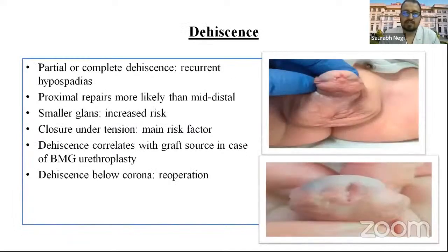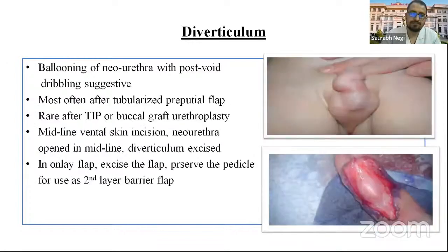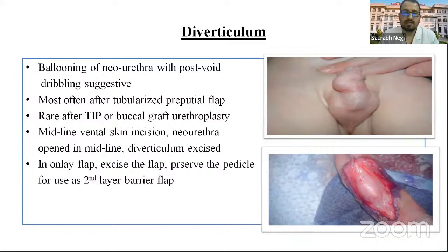Diverticulum can be partial or complete and causes recurrent hypospadias symptoms. Proximal repairs are more likely than distal repairs. Increased risk includes small glans and closure under tension. In BMG urethroplasty, the source of graft is correlated with dehiscence, and dehiscence below the corona needs re-operation. The ballooning of the new urethra with post-void dribbling is suggestive. It is most often seen after tubularized prepucial flap and rarely after buccal mucosa or TIP urethroplasty. Treatment involves a midline ventral skin incision, opening the neo-urethra in the midline, and excising the diverticulum. In onlay flap cases, the flap is excised and the pedicle preserved for use as a second layer or barrier flap.